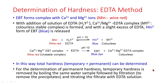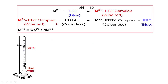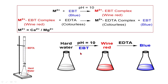For the determination of permanent hardness, temporary hardness is removed by boiling the same water sample, followed by filtration, and titrating the filtrate with EDTA. These are the chemical equations. Calcium and magnesium ions react with EBT to give the calcium-magnesium EBT complex, which is wine red in color. Hard water at pH 10 with EBT gives rise to wine red color. When this complex is titrated against EDTA, we get the calcium-magnesium EDTA complex, which is colorless, and EBT is set free.